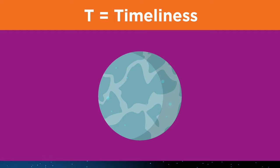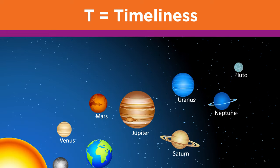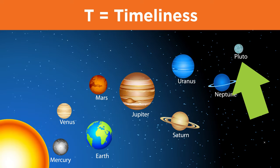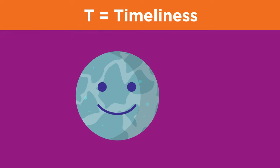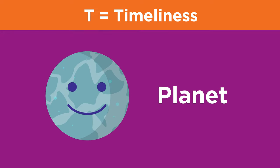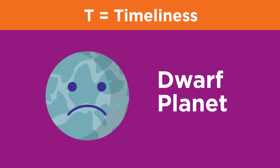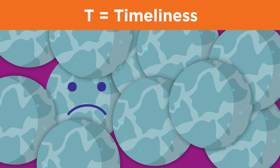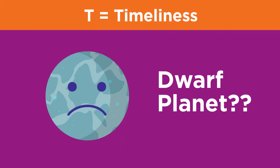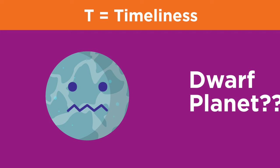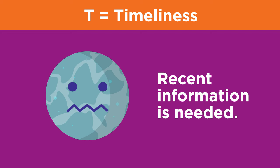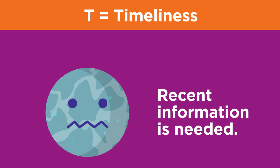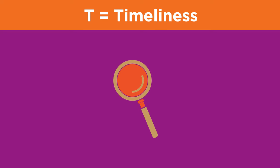Consider Pluto. Not that long ago, our solar system had nine planets and Pluto was one of them. Recently, Pluto was reclassified from a planet to a new category called dwarf planets. Since then, astronomers have been discovering even more dwarf planets. Now scientists are again debating Pluto's planet status. This is an example of how timeliness matters when selecting a source — in this case, recent information is needed.